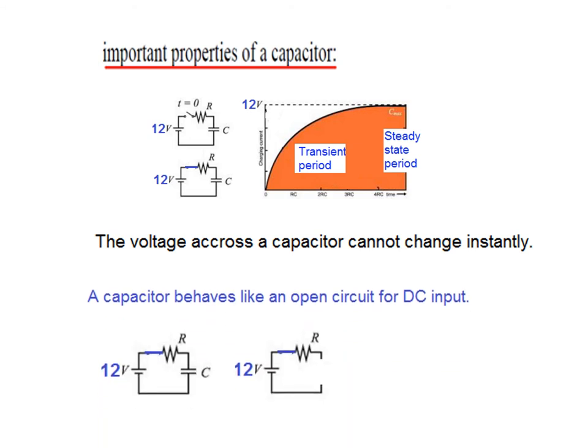The second property is that a capacitor behaves like an open circuit for DC input. We have connected it through a battery, so the battery has charged the capacitor. And once the capacitor is fully charged, it will now behave like an open circuit, because no charge can flow through this. We can denote the capacitor under DC condition as open circuit.